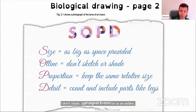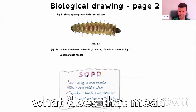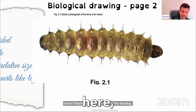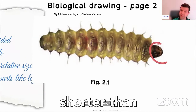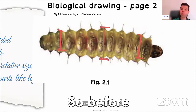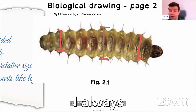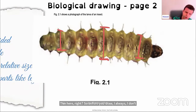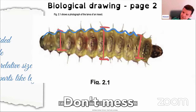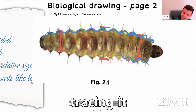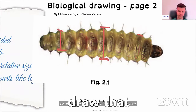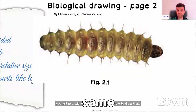Proportions means the relative size. Take a look at the drawing — the head is shorter than its body, the worm is thicker in the middle and thin at the ends. So before you draw, I always make an outline first. I follow the drawing with my pencil — don't mess it up with the pen. While you're tracing it with your pencil, you will start to figure out how to draw that worm. So keep the same proportions.